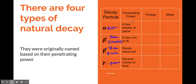Looking at the penetrating power — moving from alpha to beta to gamma, you get more and more penetrating power. Alpha is not very good at getting through materials, beta is a little better, gamma is the best. The charge on an alpha particle is 2+ — two times the elementary charge, positive. The charge on a beta-negative is negative 1 elementary charge. Beta-positive is positive 1 elementary charge. And gamma is neutral.